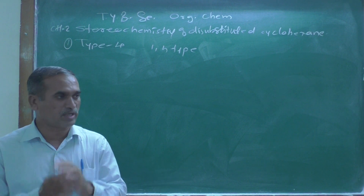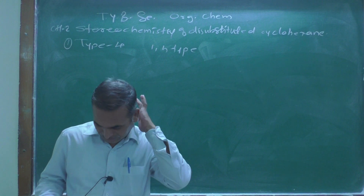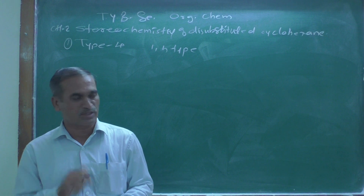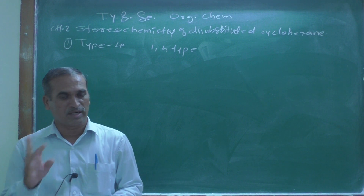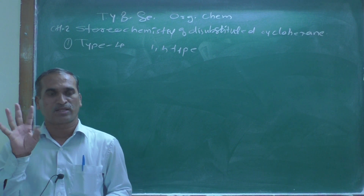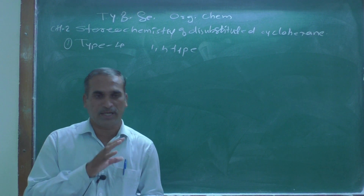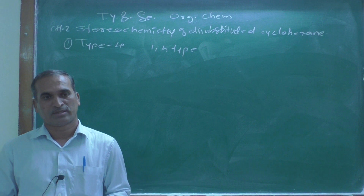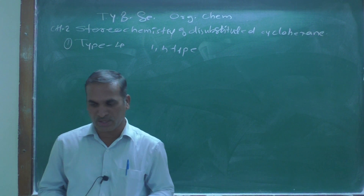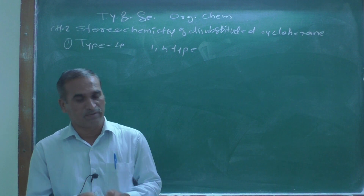We learned about four types of structural isomers with respect to the following positions: 1,1-disubstituted cyclohexane; 1,2-disubstituted cyclohexane; 1,3-disubstituted cyclohexane; and 1,4-disubstituted cyclohexane. These are the four structural isomers obtained for disubstituted cyclohexane.